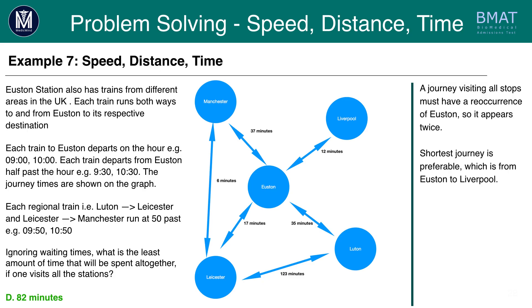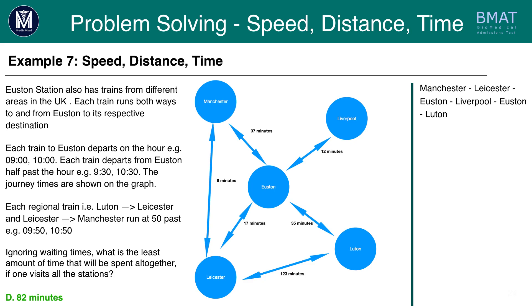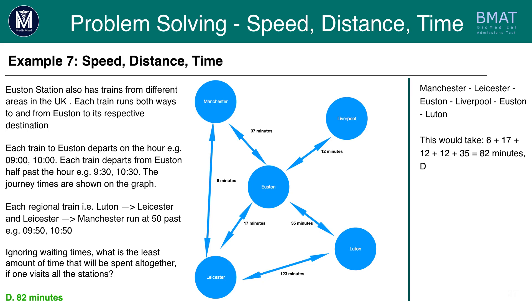The route of Luton to Leicester has to be avoided because it exceeds the highest option of 84 minutes given in the question. A good option would be: Manchester to Leicester to Euston to Liverpool, back to Euston, and then to Luton. That takes 6 minutes, then 17 minutes, then 12 minutes to go from Euston to Liverpool, 12 minutes to go from Liverpool to Euston, and 35 minutes to go from Euston to Luton. We're told to ignore waiting times, so that gives us 82 minutes — the answer is D.